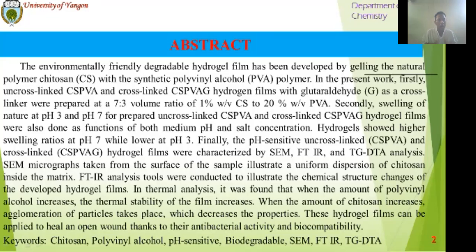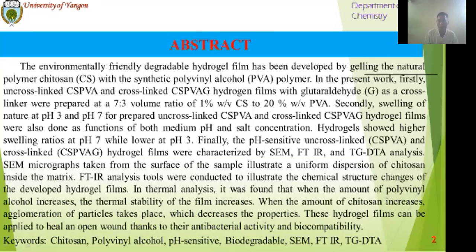The hydrogel showing higher swelling ratio at pH 3 and lower swelling ratio at pH 7. Finally, the pH 7:3 crosslinked and uncrosslinked hydrogels were characterized by SEM, FTIR, and TGA analysis. SEM micrographs taken from the surface of the samples show a trade and uniform dispersion of hydrogel inside the matrix. SEM, FTIR, and TGA analysis will attest to the chemical structure change of the hydroxyl chlorine.